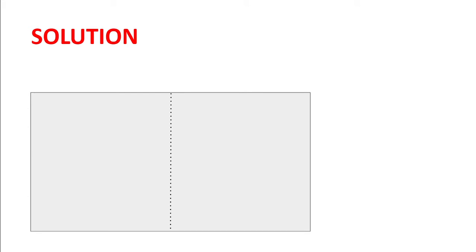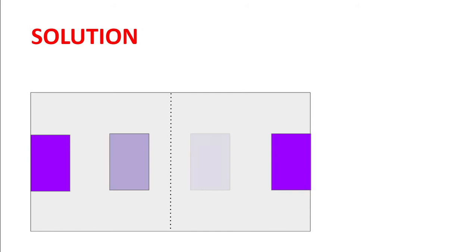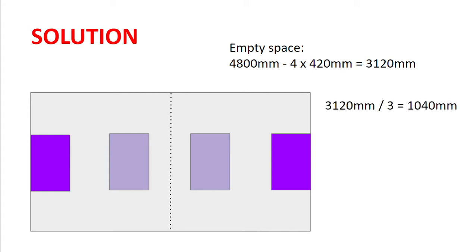With such a wordy problem like this it's always best to start with a diagram. Here we have the wall and the center of the wall marked with a dotted line. We then draw in the pictures and find the total empty space between the pictures is 4800 millimeters minus 4 multiplied by 420 millimeters, which is 3120 millimeters. Because there are three equal spaces we divide this by three to get each space to have length 1040 millimeters.